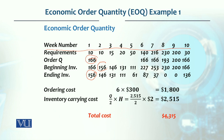This ending inventory became the beginning inventory for week 2, shown as 156. In week 2 also, 10 units were consumed, so ending inventory became 146. In week 3, beginning inventory was 146, 15 units were consumed, so ending inventory was 131. We calculate ending and beginning inventory for each week in this way.